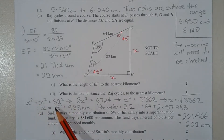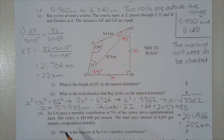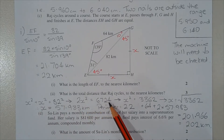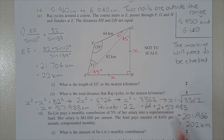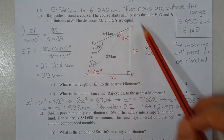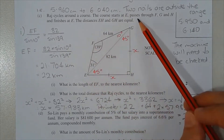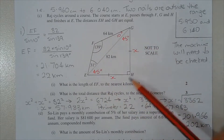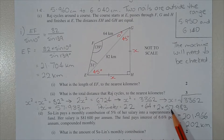Using Pythagoras: x² + x² = 82², so 2x² = 6724, giving x² = 3362, and x = 57.983 km. The total perimeter is 22 + 64 + 2 × 57.983 = 201.966 km, which rounds to 202 kilometres.